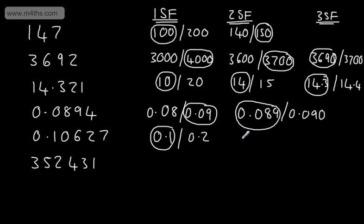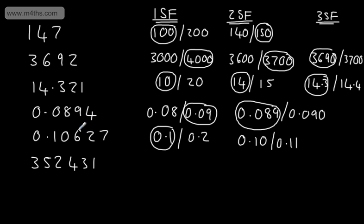If we now look at two significant figures, we'll have 0.10 or 0.11. This is the number that could change — it's the one-hundredths or the 0.01. We can see that the number next to it is greater than five, so we're going to round up.